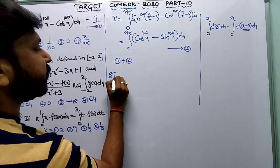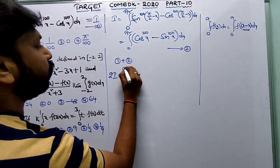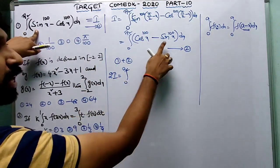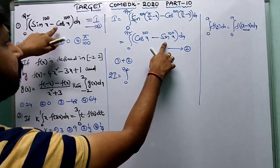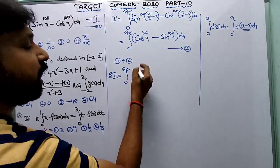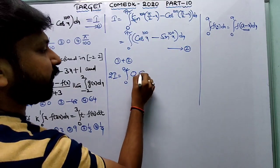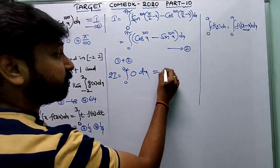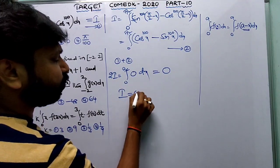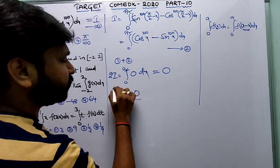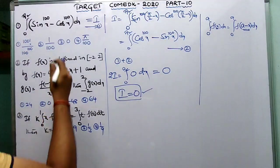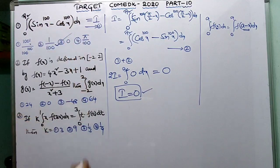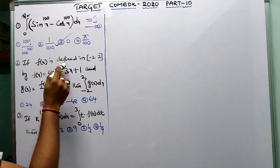Adding equation 1 and equation 2: I plus I equals 2I, and the integral from 0 to π/2 — the positive and negative terms cancel — giving 0 dx, which equals 0. So I = 0/2 = 0. The answer is the third option: zero.